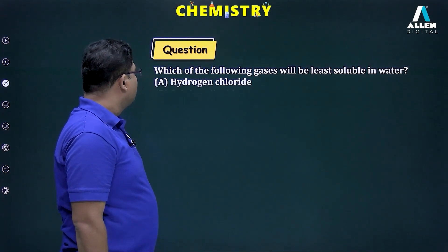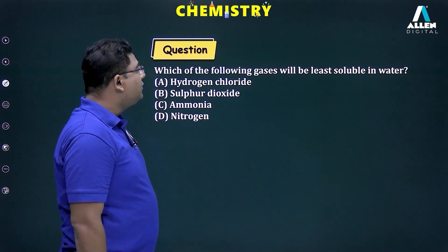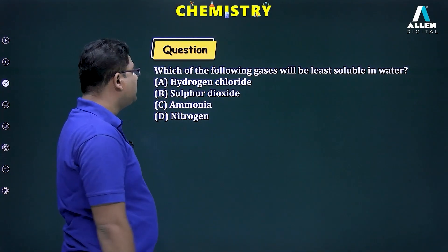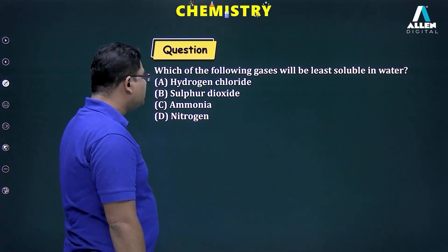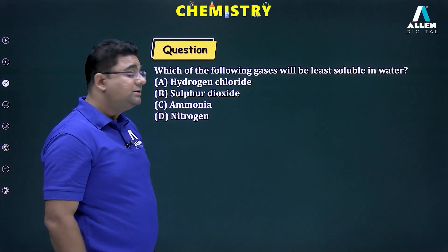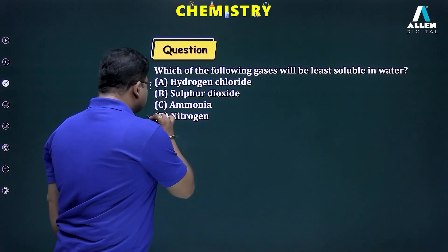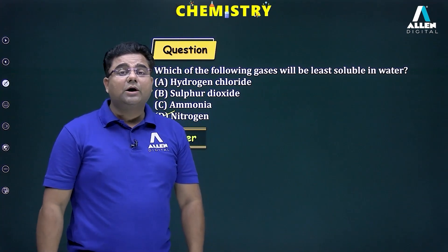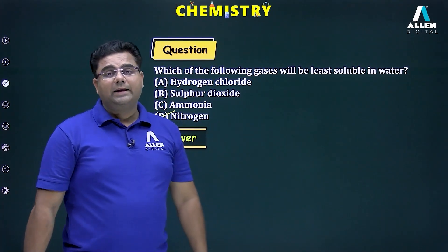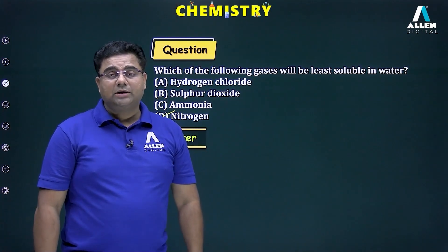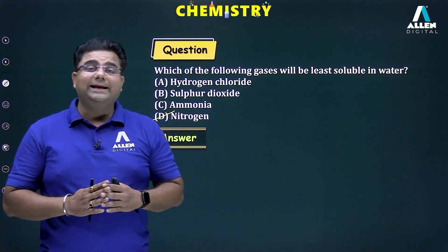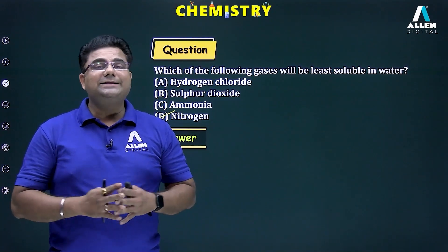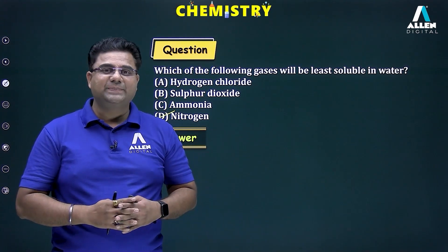Question 4: Which of the following gases is least soluble in water — hydrogen chloride, sulfur dioxide, ammonia, or nitrogen? The correct answer is nitrogen, because it is nonpolar in nature. Hope you understood everything in this lecture. Thank you, and have a nice day.